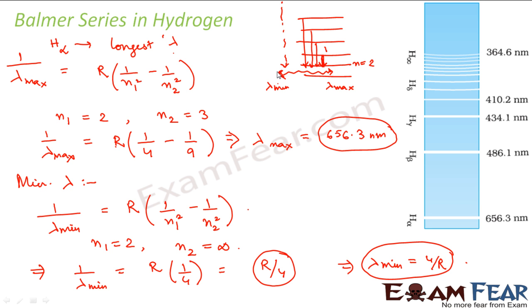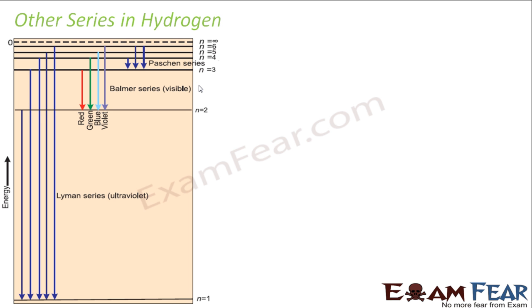The wavelength of a spectral line changes as radiation takes place from a higher energy level. Beyond lambda minimum and lambda maximum, the continuous spectra exists. This discrete spectra exists only between these two values of lambda.